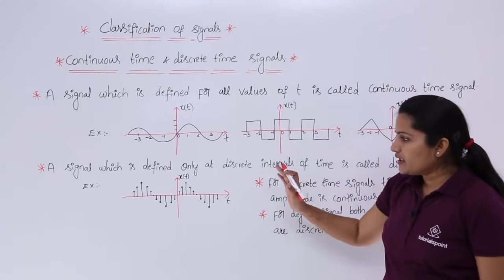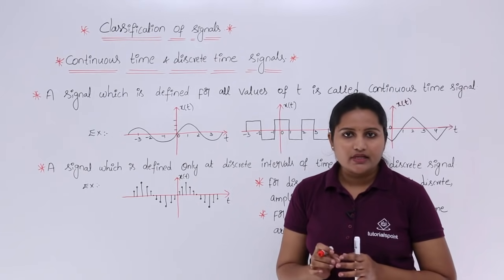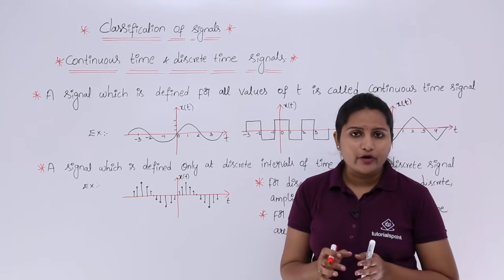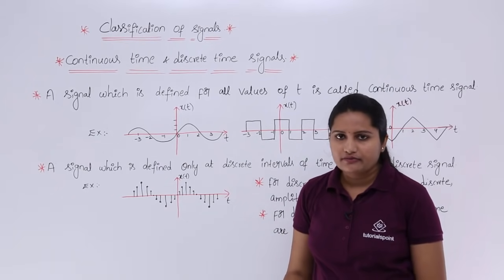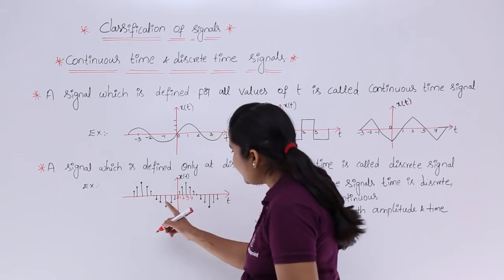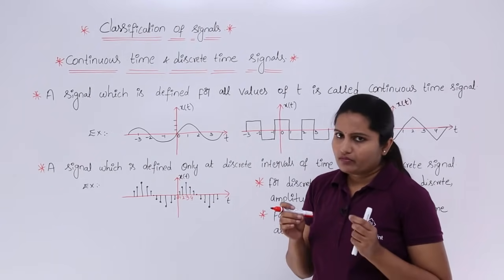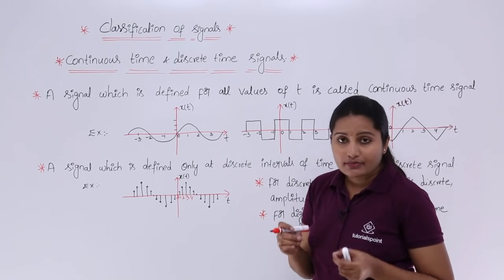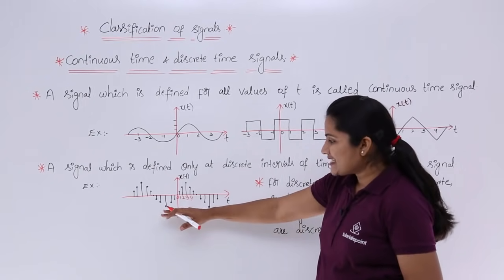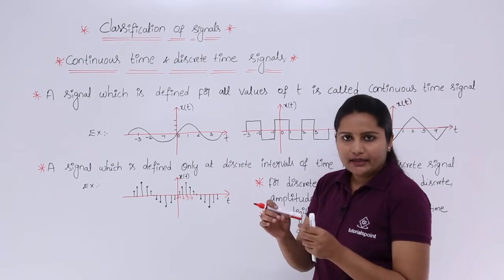Coming to the discrete time signal — here we cannot determine values at some intervals of time. Only at discrete intervals of time can we define the signal. If asked for any decimal point values like at 0.1, we cannot determine that signal. Discrete intervals are only at 0, 1, 2, 3, 4. So for non-discrete intervals like 0.1, 2.5, or 6.5, we cannot determine the signal. This signal has samples with different voltages at particular instants of time.